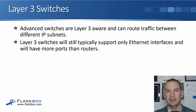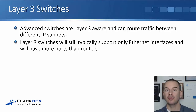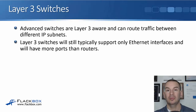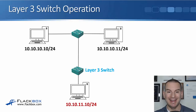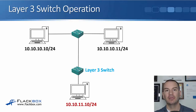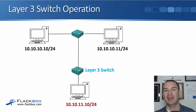You can also get advanced switches which are layer 3 aware and can route traffic between different IP subnets. When you get one of those layer 3 aware switches, it's known as a layer 3 switch. In the diagram, we only have switches in the network infrastructure, but the switch at the bottom is a layer 3 switch — it's aware of the 10.10.10 network and the 10.10.11 network and is able to route traffic between them.